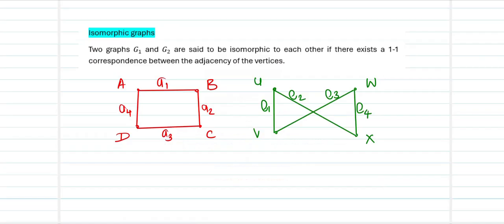What are meant by isomorphic graphs? Suppose we are having two graphs, G1 and G2. They are said to be isomorphic to each other if there exists a one-to-one correspondence between the adjacency of the vertices. If I am able to establish a one-to-one correspondence between the adjacency of the vertices of G1 and G2, then I can call these two graphs to be isomorphic to one another.